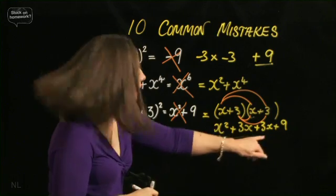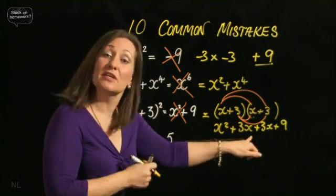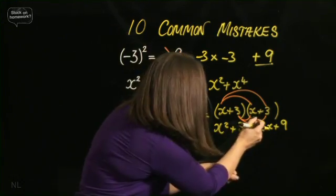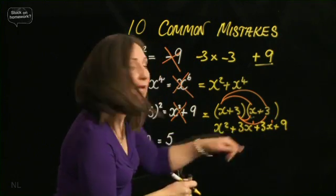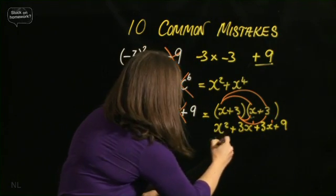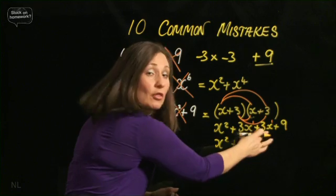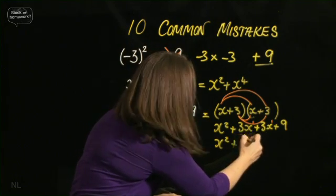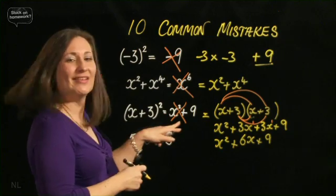Now I can gather these two middle terms together because they are like terms. They've got the power of 1 here and here. So overall, it is x squared plus 3 plus 3, 6x plus 9. Very different to that one.